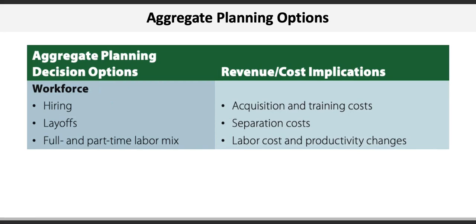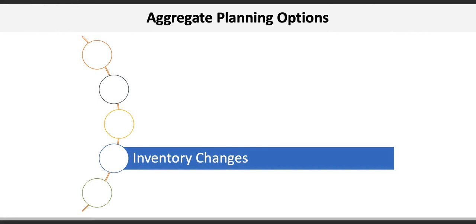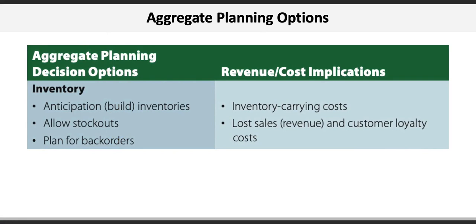Another aggregate planning option involves inventory management. Management considers whether or not to build inventories, allow for stock-outs, and plan for back-orders. The implications here can include increased or decreased inventory carrying costs, lost sales revenue, and reduced customer loyalty.